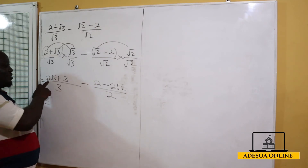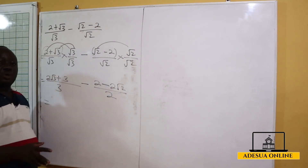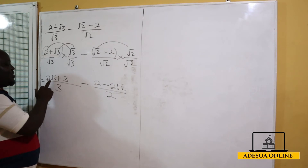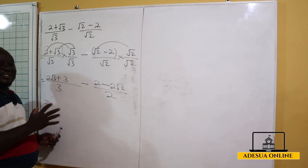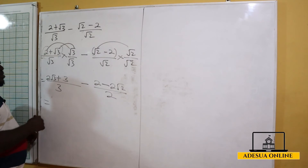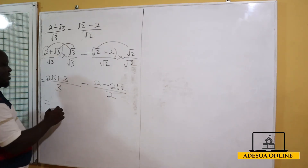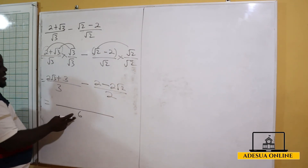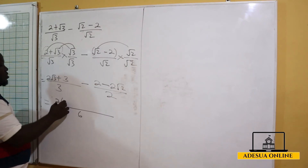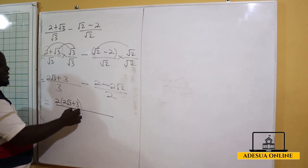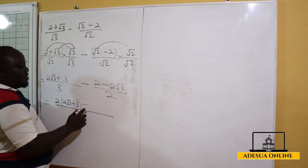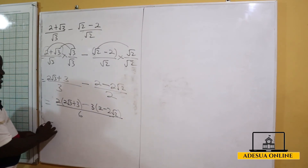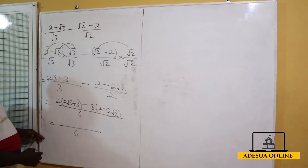Note: some students add 2 root 3 and 3 and say this is 5 root 3 — that is wrong. One term has root 3 and the other doesn't, so they cannot be combined, just like x plus y. Now we find the LCM of 3 and 2, which is 6. 3 goes into 6 two times, multiplying 2 root 3 plus 3. And 2 goes into 6 three times, multiplying 2 minus 2 root 2.